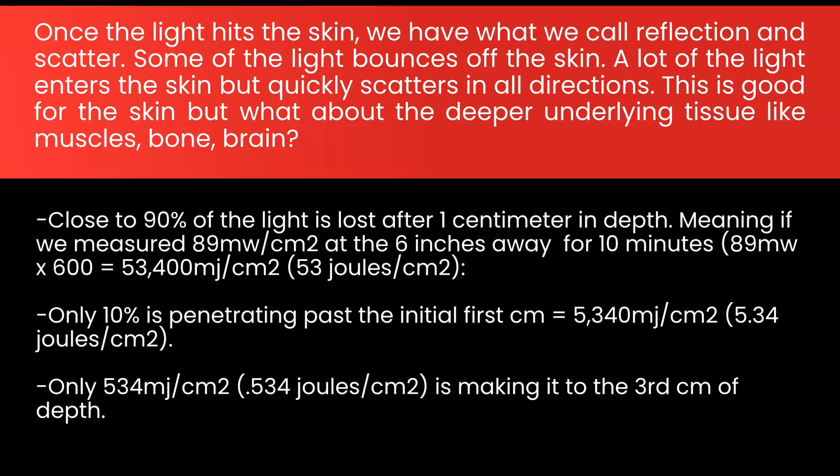Meaning, if we measured 89 milliwatts per centimeter squared at the 6-inch mark for 10 minutes, 89 times 600 seconds equals 53,400 millijoules per centimeter squared, or 53 joules per centimeter squared. Only 10% is penetrating past the initial first centimeter, which equals 5,340 millijoules per centimeter squared, or 5.34 joules per centimeter squared. And only 534 millijoules per centimeter squared, or 0.534 joules per centimeter squared, is making it to the third centimeter of depth. Let's remember that only near-infrared is making it this far. The other colors have already gone as far as they could.